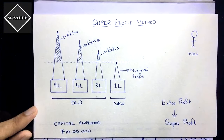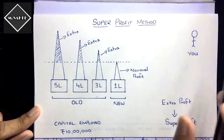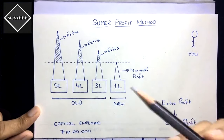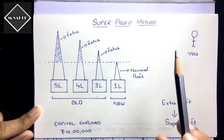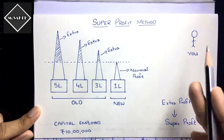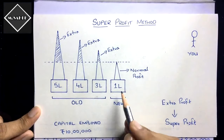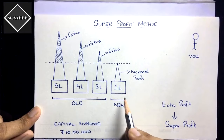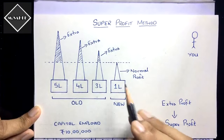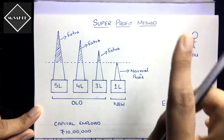Let's understand the super profit method with an example. Say you want to start a business and earn profits. You have two options: either purchase an existing old business, or create a new business from scratch — invest the capital and start your own new business.